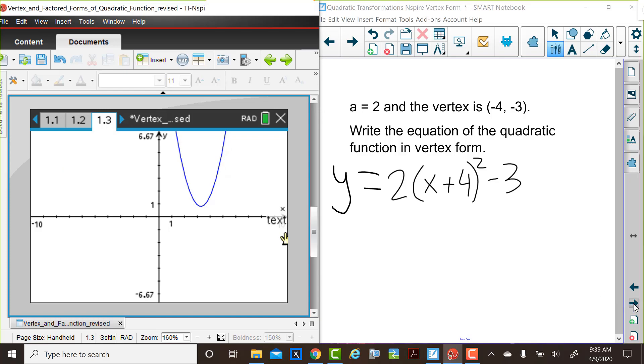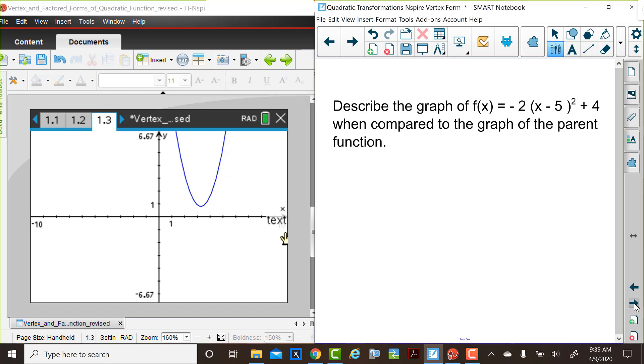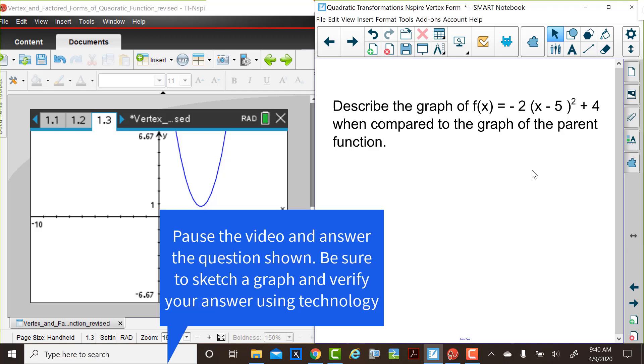Now, let's have a final challenge for you. We'd like for you to consider the graph of this function, f(x) equals -2 multiplied by (x - 5) squared plus 4. We'd like you to describe this graph when compared to the graph of the parent function. Consider your translations, how the value -2 would affect the graph. You may wish to write down the equation of the axis of symmetry as well as the vertex. And also consider the domain and range of this function. And, of course, sketch a graph.